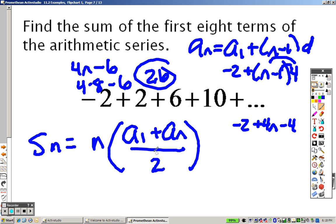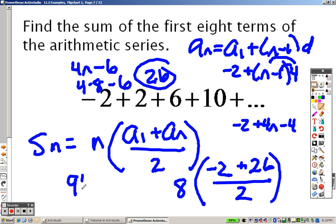So what does that mean? That means A sub 1 is negative 2. A sub N, or the eighth term, is 26. All that divided by 2. And A sub N, or we want just N, we want the sum of the first eight terms, so that is an 8. So negative 2 plus 26 equals 24. 24 divided by 2 is 12, and 12 times 8, the sum of the first eight terms is 96.